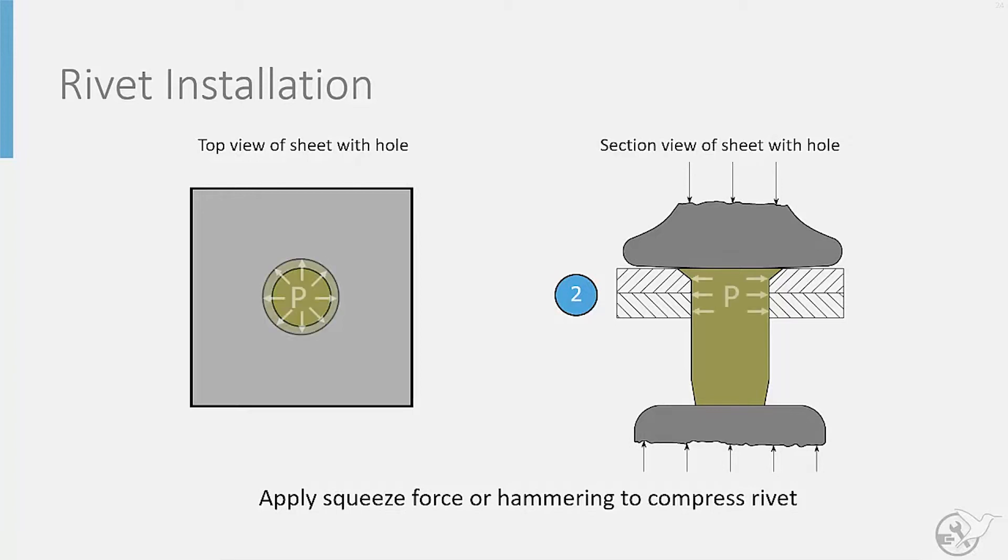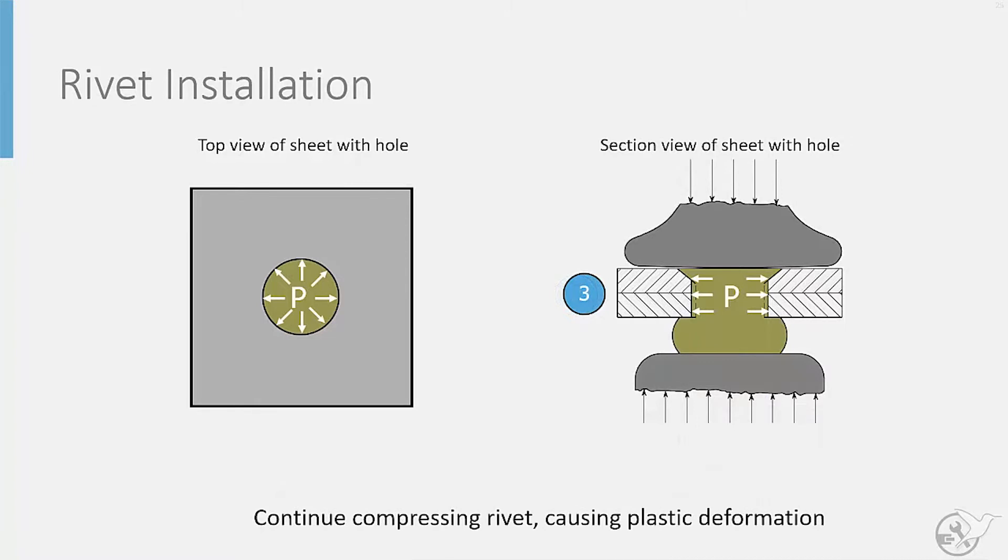As the fastener hole is filled, the rivet begins to apply a pressure on the inner surface of the holes in the sheet. Further compressive forces cause the formation of the deformed rivet head. However, it also results in plastic deformation within the sheet, highlighted here in blue.